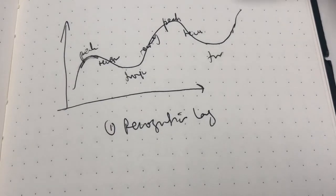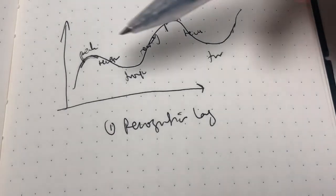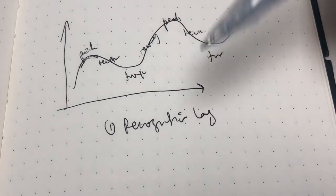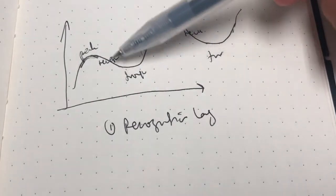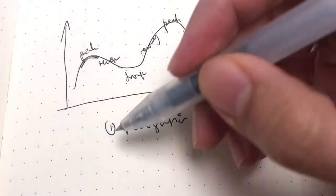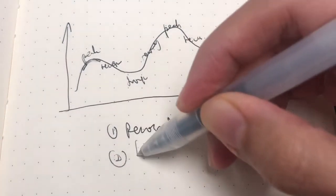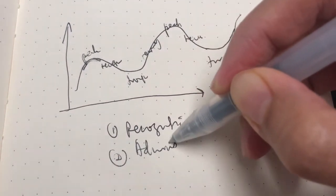By the time the government is convinced that the problem is serious enough and only starts to recognize the problem, the problem may in fact start to settle on its own. The second lag is the administration or administrative lag.